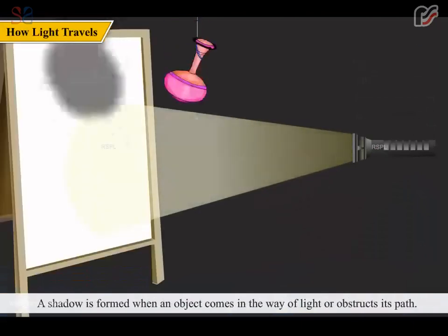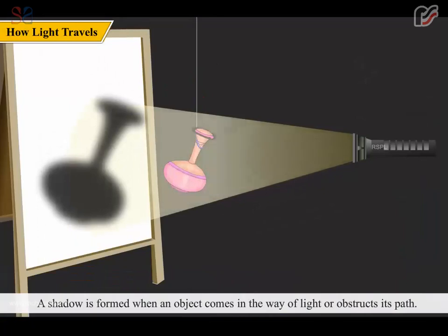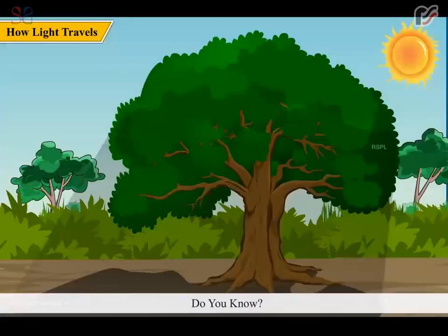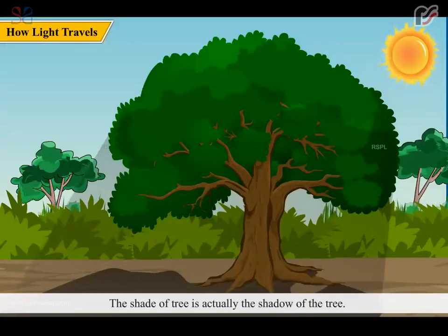A shadow is formed when an object comes in the way of light or obstructs its path. Shadow is always formed in the opposite side of the light source. Do you know? The shade of a tree is actually the shadow of the tree.